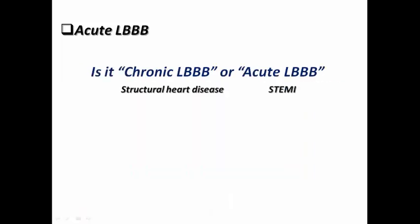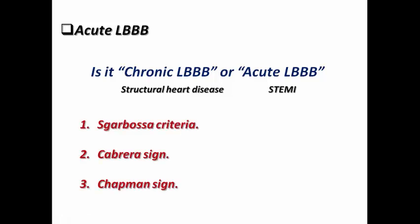The key question is: is it chronic left bundle or acute left bundle? If it is chronic left bundle, I would assume the patient has structural heart disease and the same chronic LBBB was present on their previous ECG. If it is acute left bundle, I would assume this patient is having ST-elevation myocardial infarction and I would rush to the catheter lab for primary PCI. To decide whether it is chronic or acute, we depend on three famous ECG criteria.